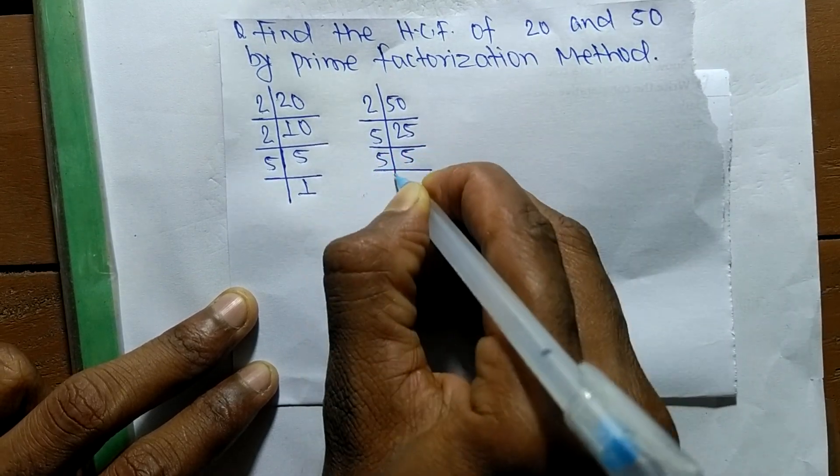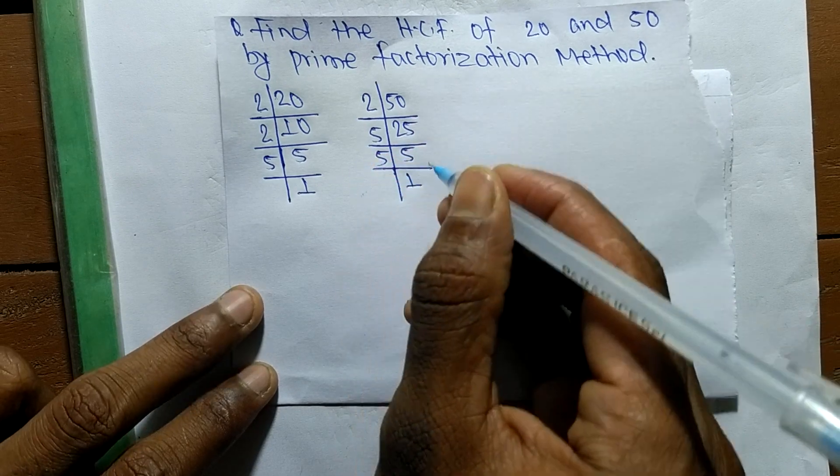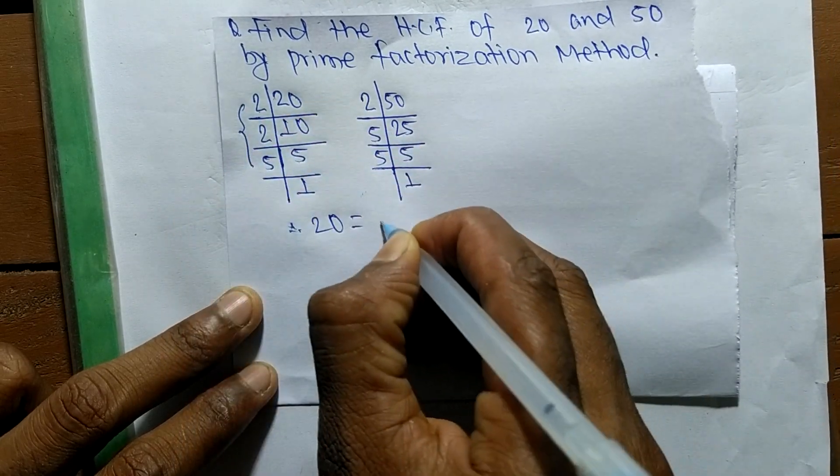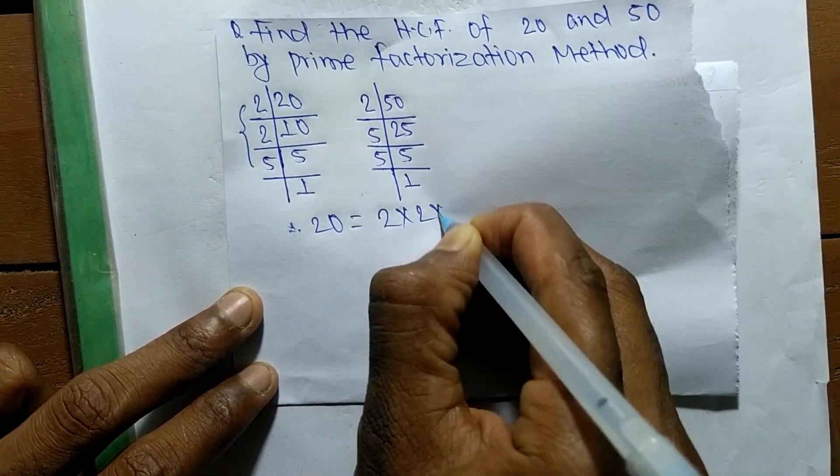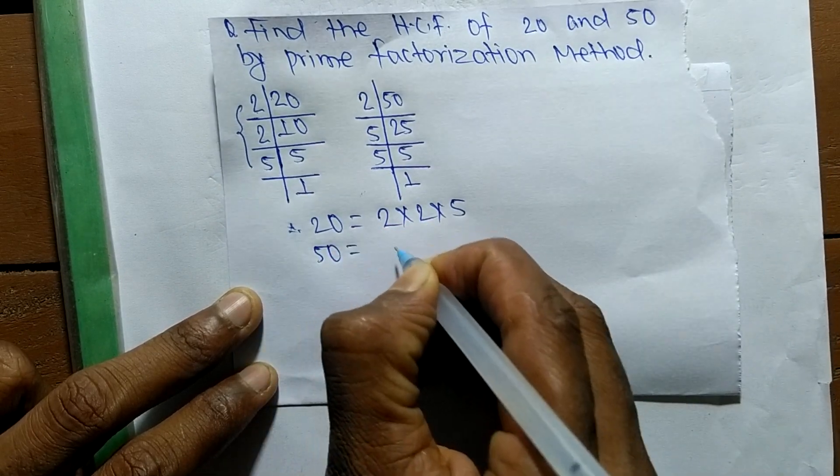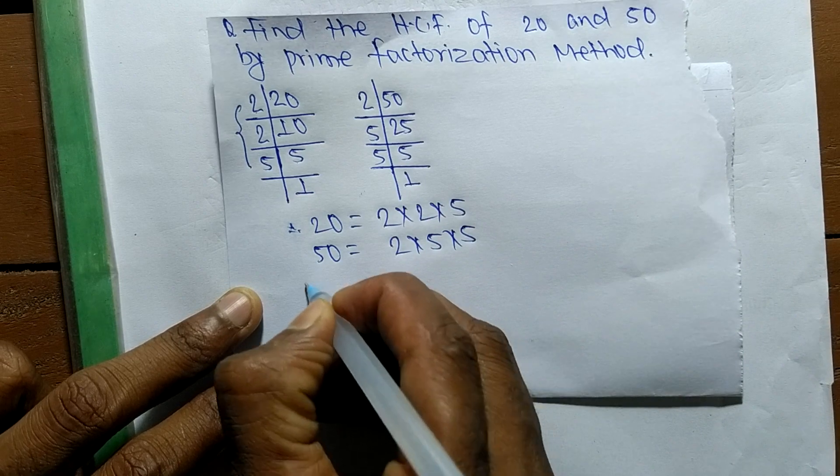So from these prime factors we can write 20 is equal to 2 times 2 times 5, and 50 is equal to 2 times 5 times 5.